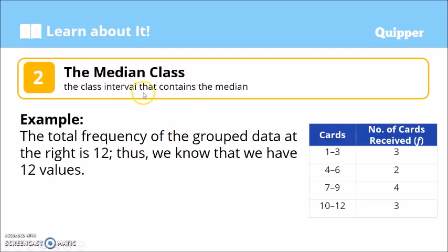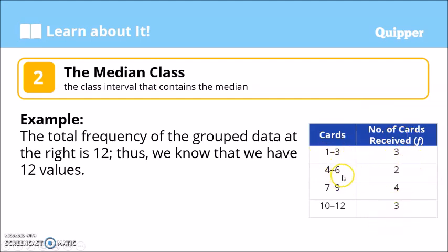The median class is the class interval that contains the median. Here in this example, it's a frequency distribution table. We know this is already grouped data because the data is given with class intervals — the exact values are no longer shown, they are in class intervals. Here are the frequencies of each class interval: 1–3 has 3, 4–6 has 2, and so on. This column tells us that the total frequency of the grouped data is 12. If you add them all, that is 12, and that is our n — we have 12 values.